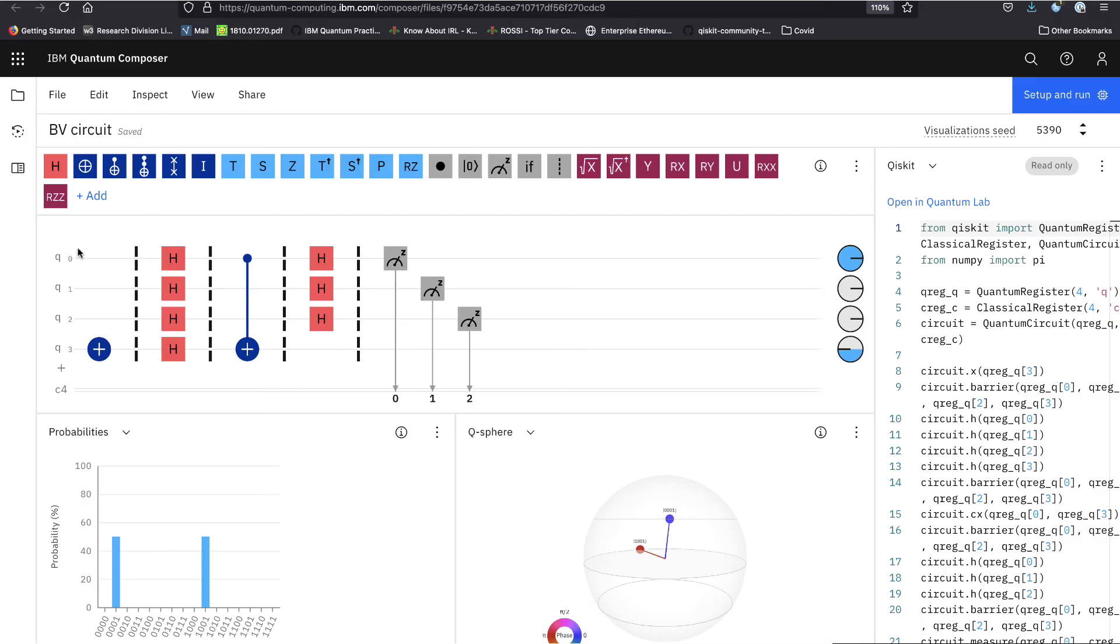Which means, let us say the inputs are x0, x1, x2. So, this just implements y xor x1. Which means A is 100. It is 1 dot x0 plus 0 dot x1 plus 0 dot x2.